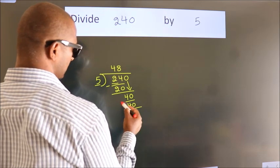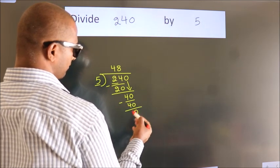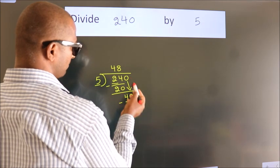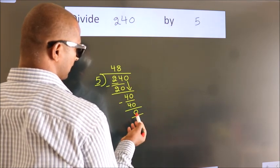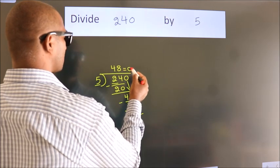Now we subtract. We get 0. After this, no more numbers to bring down, and we got remainder 0. So this is our quotient.